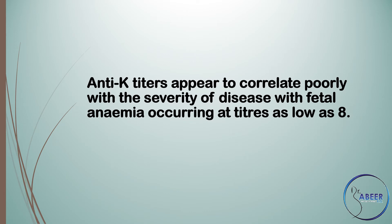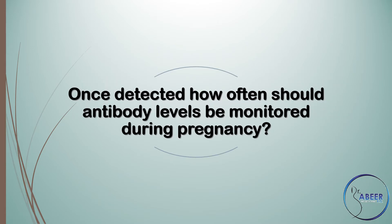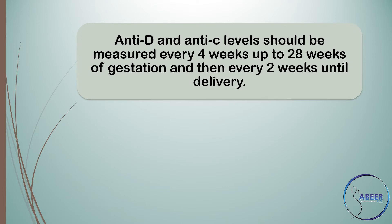Anti-K titers appear to correlate poorly with the severity of disease, with fetal anemia occurring at titers as low as 8. Once detected, how often should antibody levels be monitored during pregnancy? Anti-D and anti-C levels should be measured every 4 weeks up to 28 weeks of gestation, and then every 2 weeks until delivery.